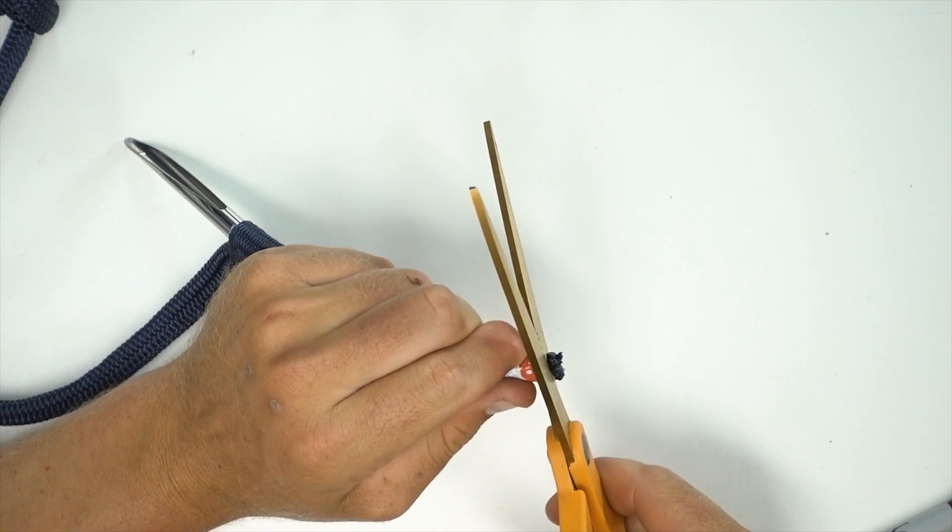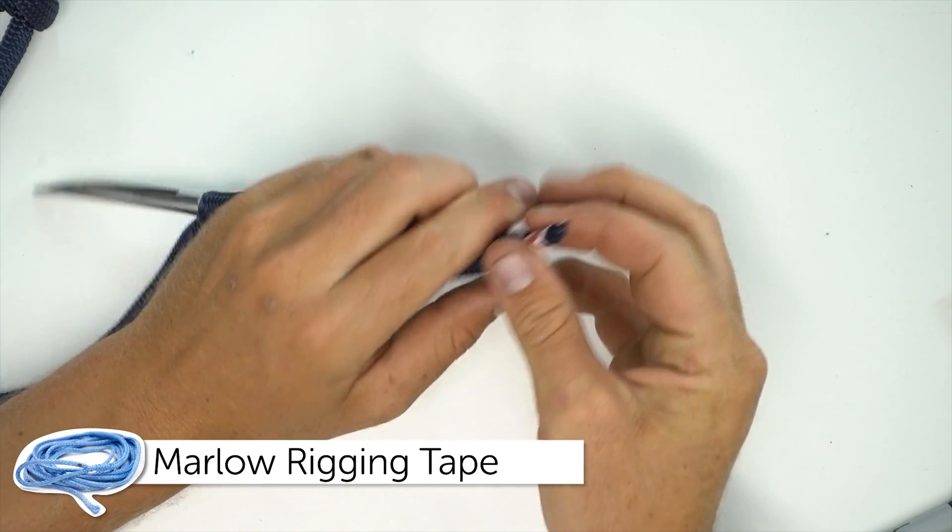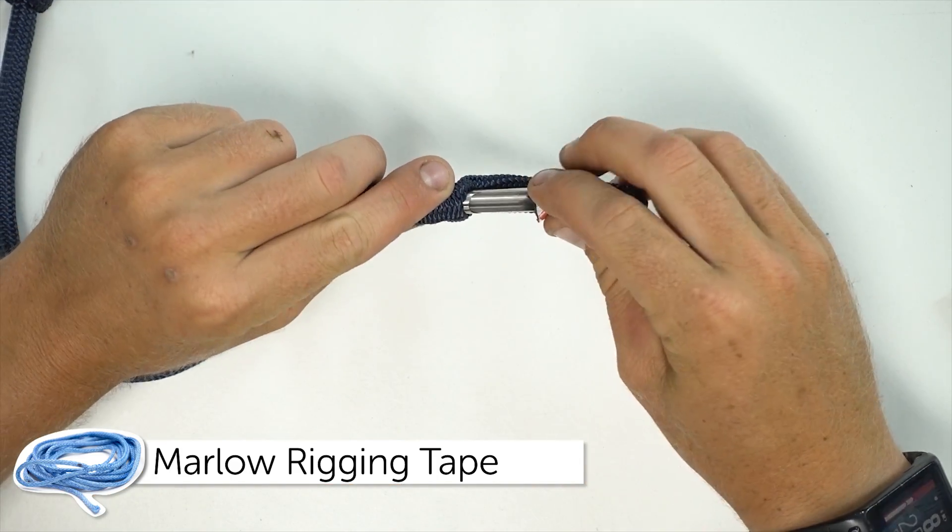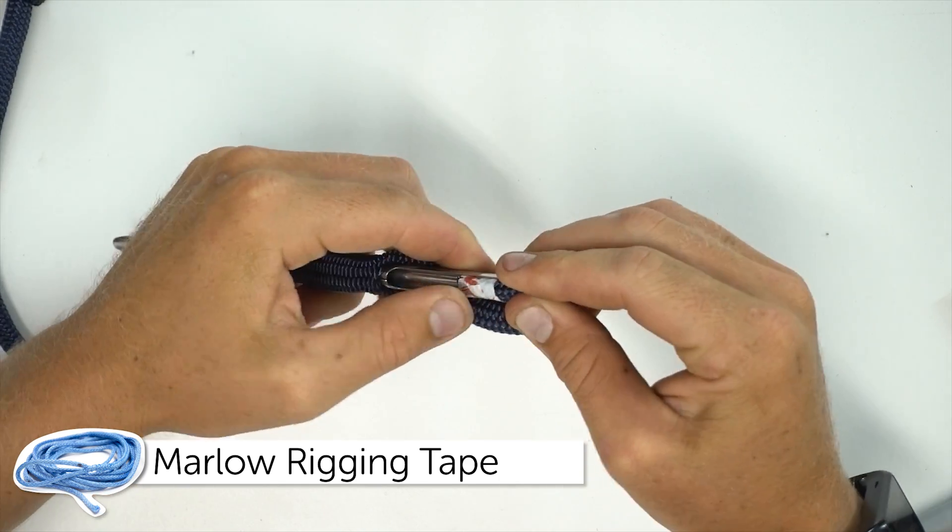We force our fid through and then we place the end of the cover into the fid. A tight layer of tape can make this much easier.